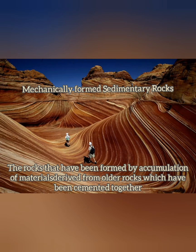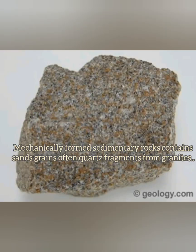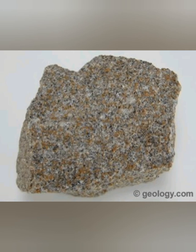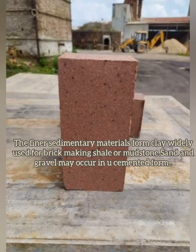Mechanically formed sedimentary rocks are older rocks which have been broken down into smaller pieces by agents of erosion, then cemented and compacted together. They contain sand grains and quartz fragments derived from granites, and vary in different colors, textures, and compositions based on their formation. Many types of sandstones have been quarried for building purposes and for making grindstones. Finer sedimentary materials form clay, widely used for brick making, shale, or mudstone. Sand and gravel may also occur in uncemented form.